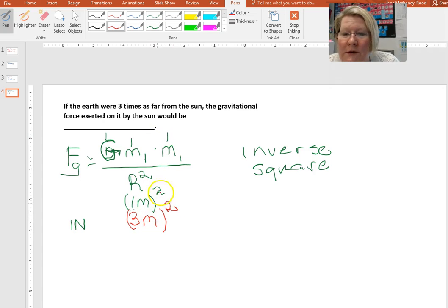So we have one times one times one, those values don't change, over three squared. So one over three squared is one ninth of the value. That means it goes down by nine because this is an inverse relationship, but the squared here makes it non-proportional.